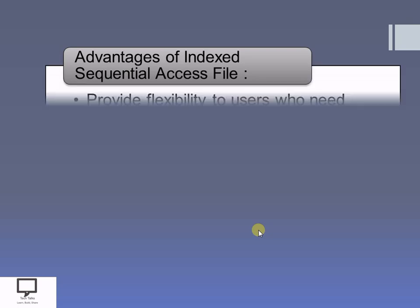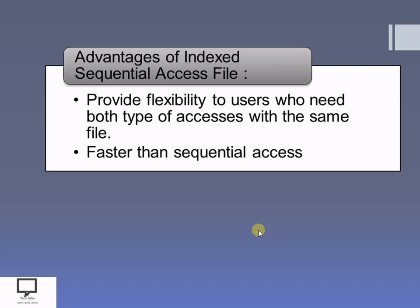Now let's look at the advantages and disadvantages of the index sequential file. First, the advantages. This index sequential file provides flexibility to users who want to access the file either as a purely sequential file or as an index sequential file. If the user wants to access all the records sequentially, they can do that. Otherwise, with the help of the index, the user can access a particular record as well. With the help of the index, searching will be faster. That's why sequential access is slower than index sequential access — the index sequential access is faster than the plain sequential access file.